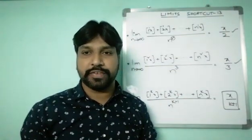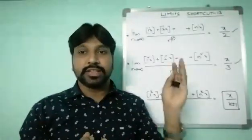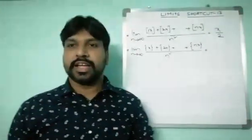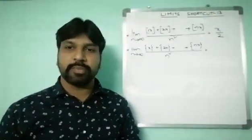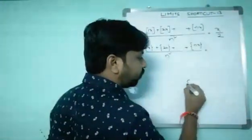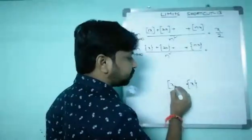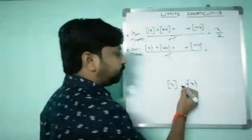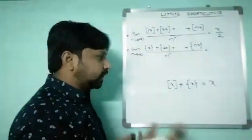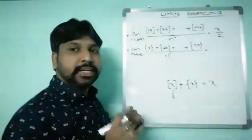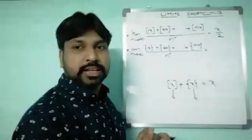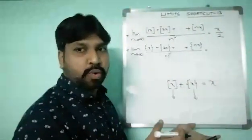Now I'm going to discuss the fractional part of X. What is the fractional part of X and how do we evaluate sums involving it? The fractional part of X is denoted with curly brackets, while the integral part of X uses square brackets. If you add the integral part of X and the fractional part of X, you get X. The integral part of X always gives an integer, and the fractional part of X always gives a fractional quantity.